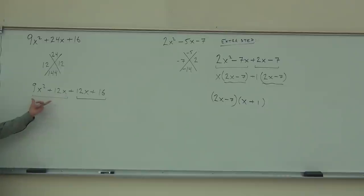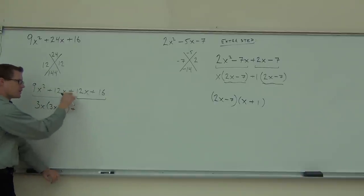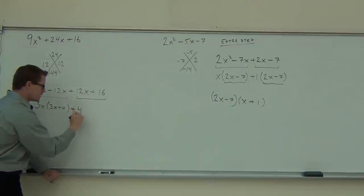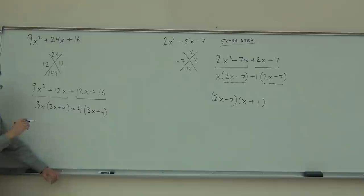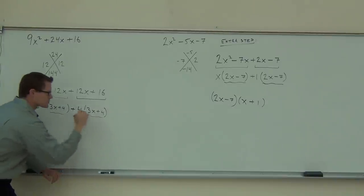What factors out of the first two? 3x. What are we going to be left with from this part? 3x plus 4. And we're going to have a plus because we have a plus there. That sign's going to follow down. It says we're going to factor out a positive something. That's what this means. So we factor out a positive what out of that? 4. And we're going to be left with what? 3x plus 4. Did we do it right? Yeah. You can immediately check because this and this are the same. If those were different, you would have this problem wrong.